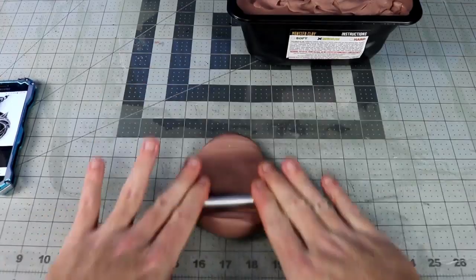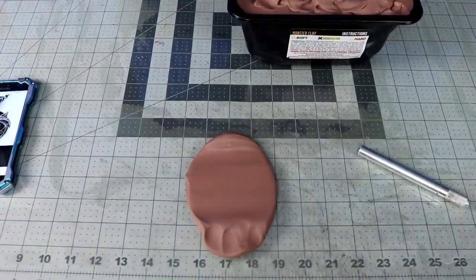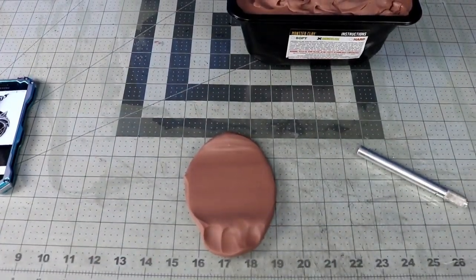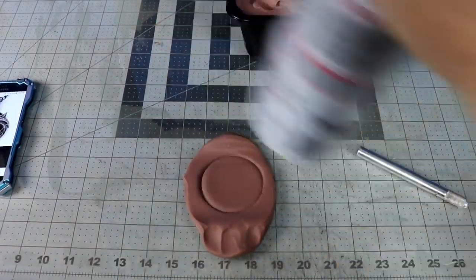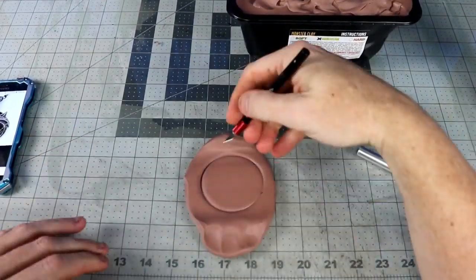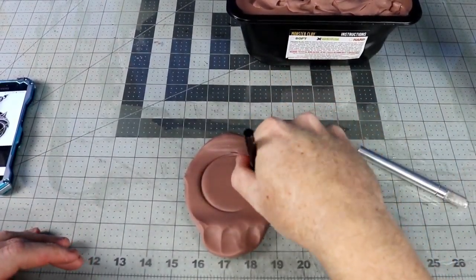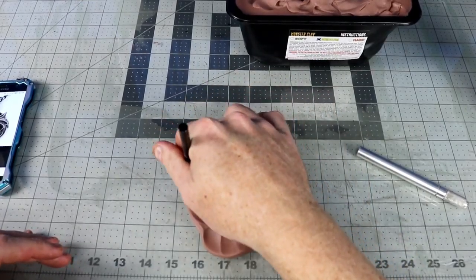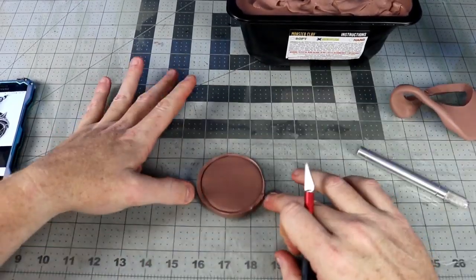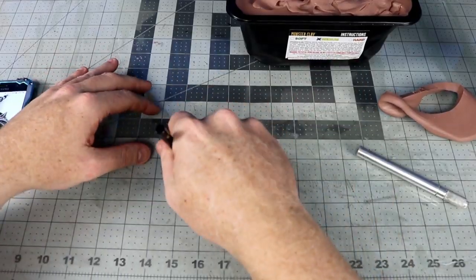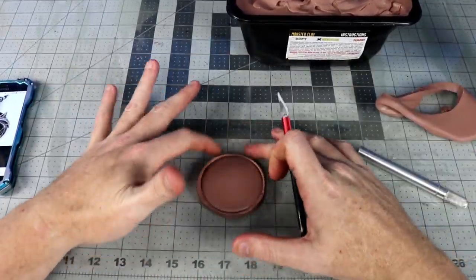Start by heating up the monster clay as directed on the package. I'm using a medium monster clay and begin the construction of the medallion by working from the bottom up. I start by rolling it out and then use the diameter of a can of air for my base. Once I got the indention in there, I simply trim around the excess.